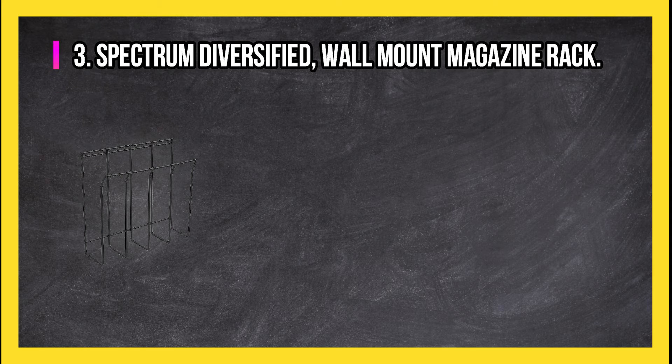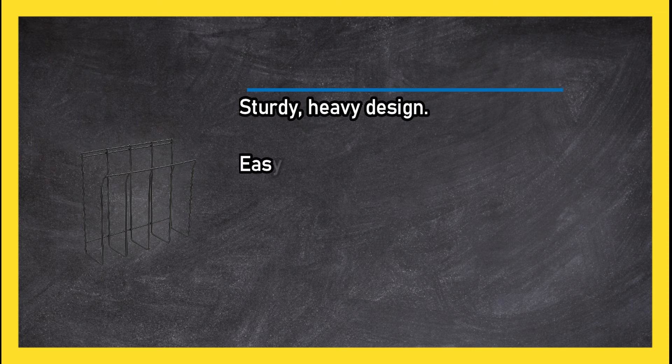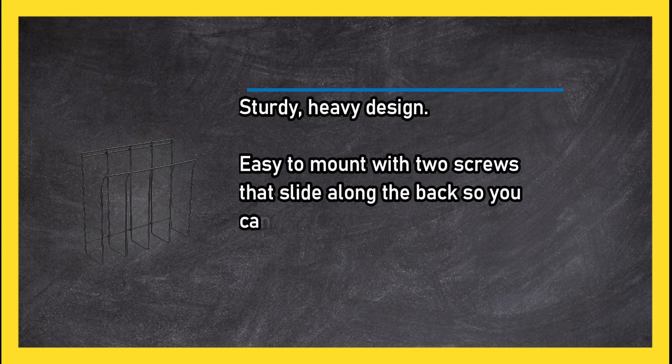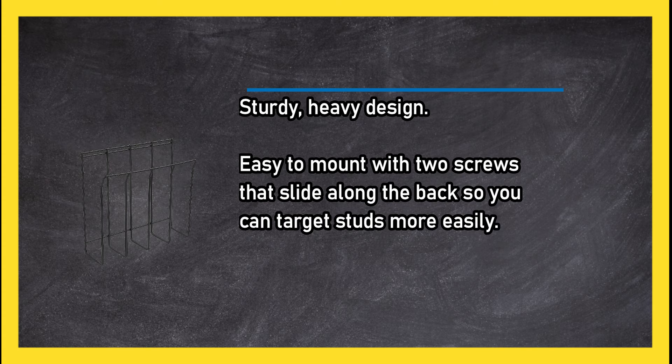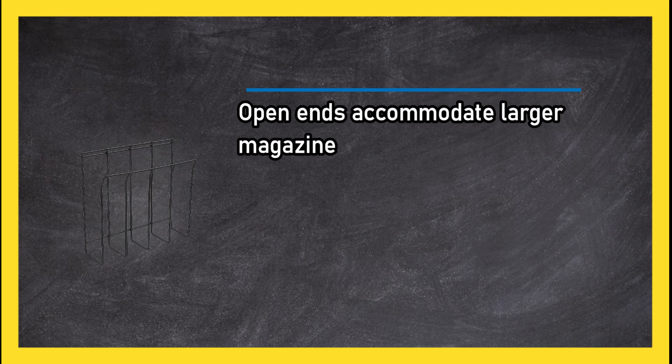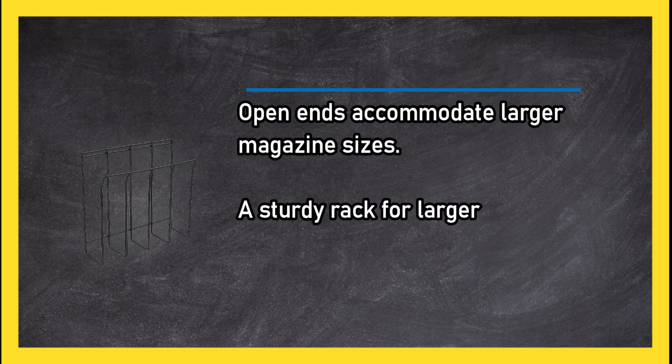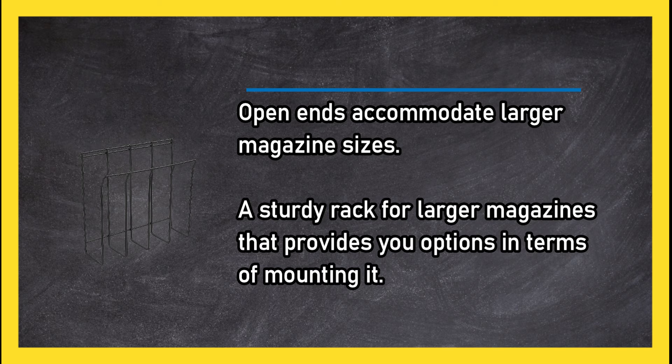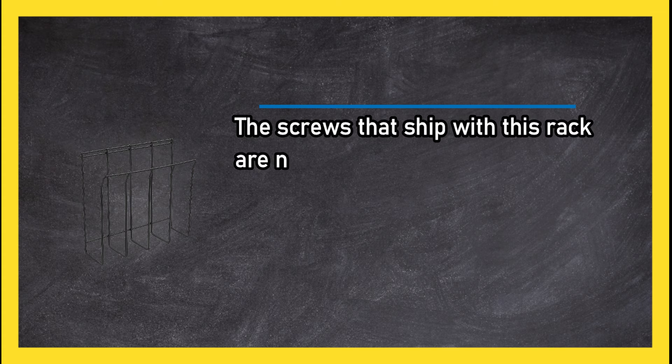At number 3: Spectrum Diversified Wall Mount Magazine Rack. Sturdy heavy design, easy to mount with two screws that slide along the back so you can target studs more easily. Open ends accommodate larger magazine sizes. A sturdy rack for larger magazines that provides you options in terms of mounting it. The screws that ship with this rack are not the highest quality, so you may wish to invest in your own.